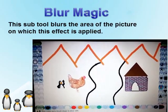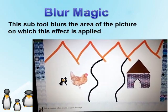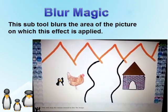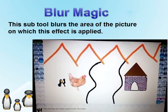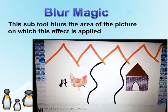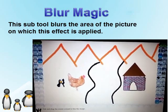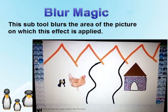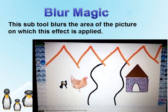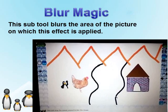Blur Magic: This sub tool blurs the area of the picture on which this effect is applied. Let us see how it works. Select the magic tool and then the blur effect from the sub toolbox. Apply it all over the boundary of the picture and see how it works. Every time you use this tool, the image will fade a little more than the original one.